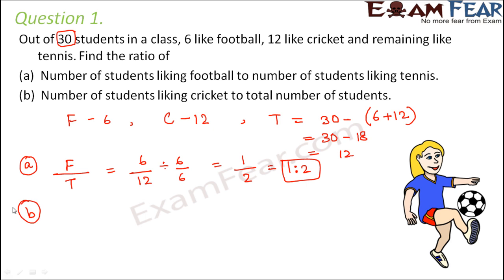In a similar way, let's look at the second one. Number of students liking cricket to total number of students. So cricket is 12 and total number of students is 30. So 12 by 30.